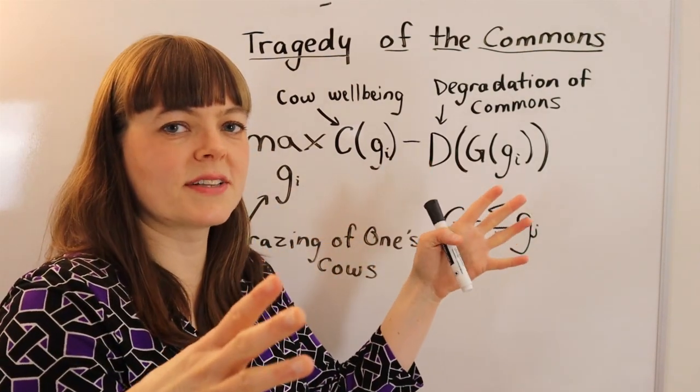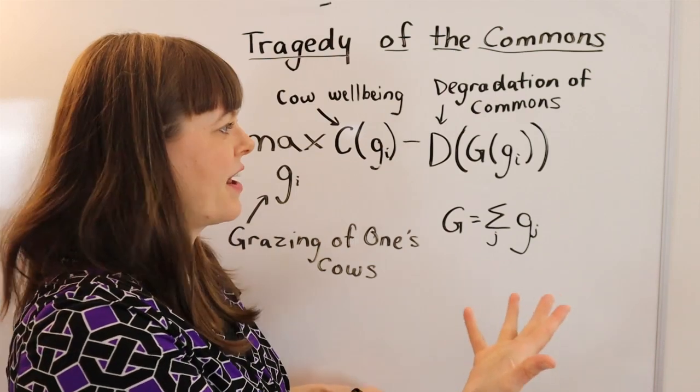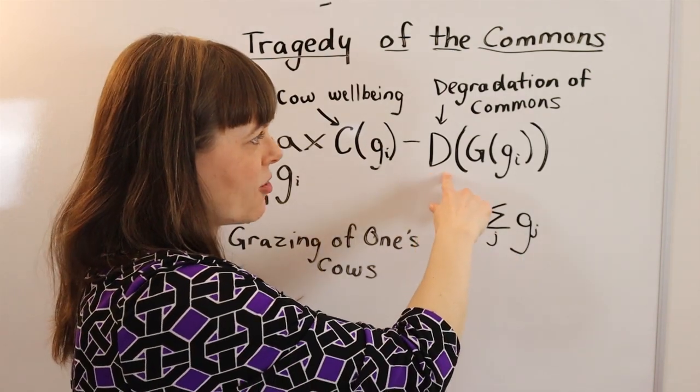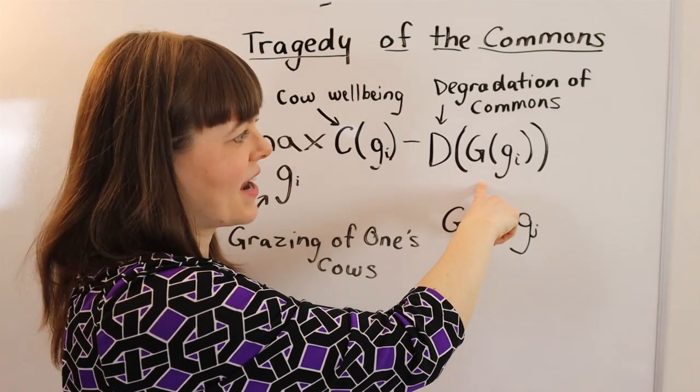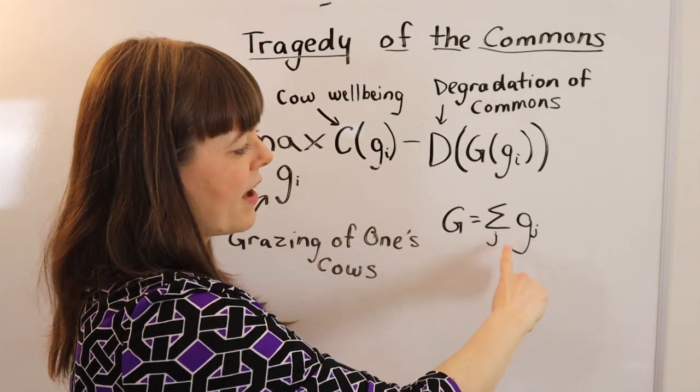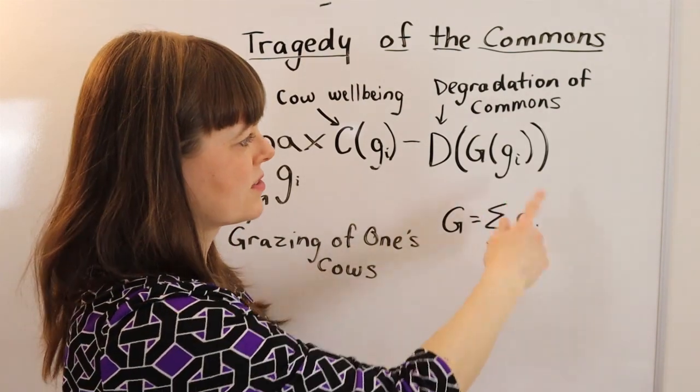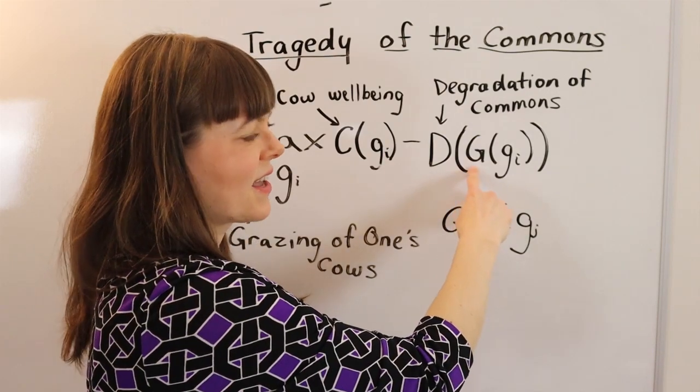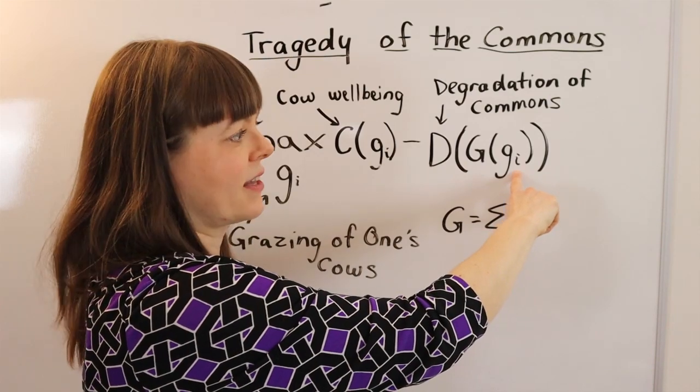How much is the commons depleted by their one cow grazing in that area? The degradation of the commons is a function of the total amount of grazing in the town, where grazing equals just the sum of everybody's individual decision about how much to graze their cows. In which case, the total grazing is a function of how much you personally choose to let your cows graze in that land.